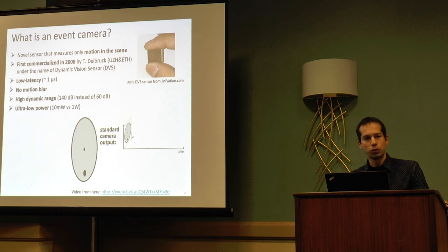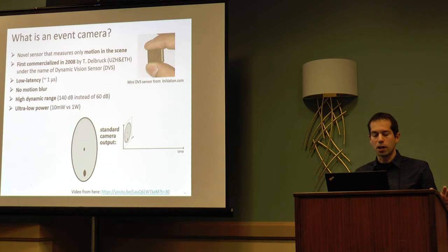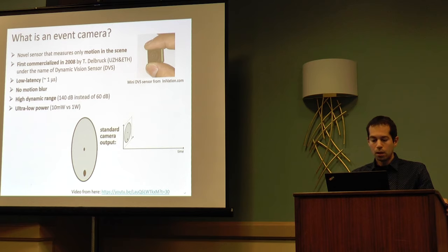An event camera is a novel sensor that measures only motion in the scene. It was first commercialized by Professor Tobi Delbruck in my department at ETH Zurich under the name Dynamic Vision Sensor. What is special about this sensor is that all the pixels are smart and independent of each other. Each pixel basically reacts only to motion in the scene - whenever a single pixel detects a change of intensity, it triggers an event containing the x and y coordinates, the timestamp, and the sign of the change, positive or negative.